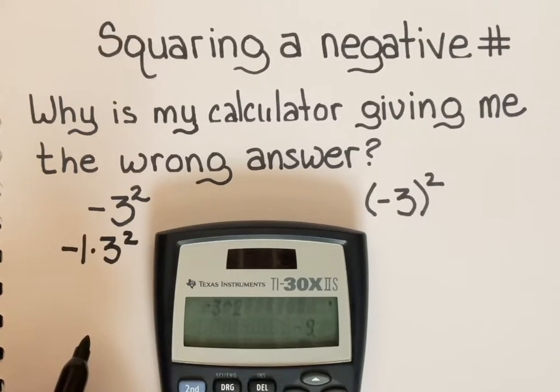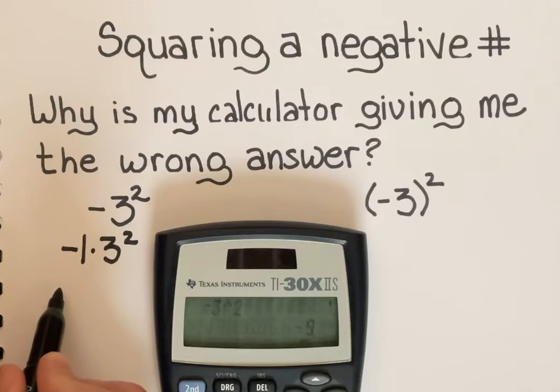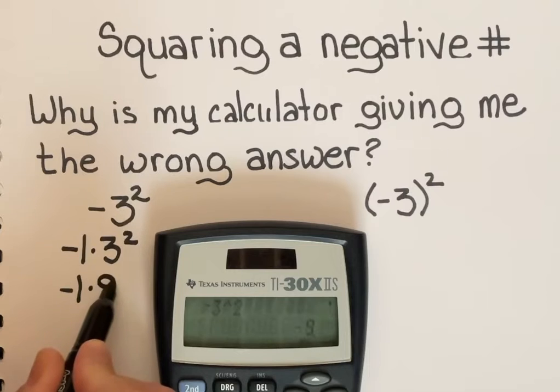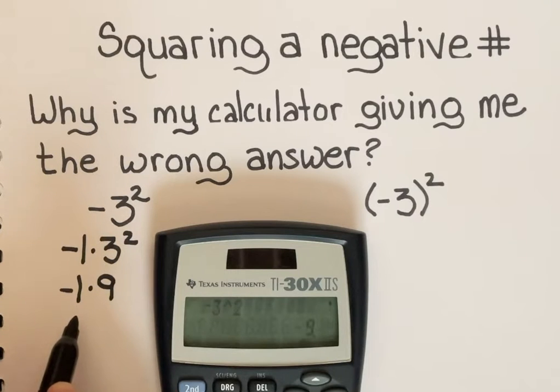It sees that as negative 1 multiplied by 3 squared. Exponents first, 3 times 3 is 9, negative 1 multiplied by 9 is negative 9.